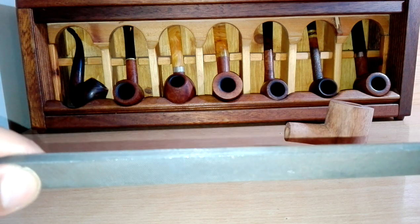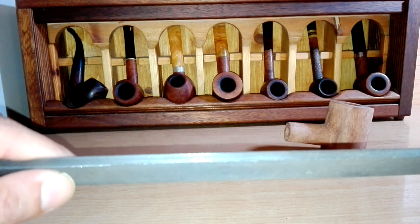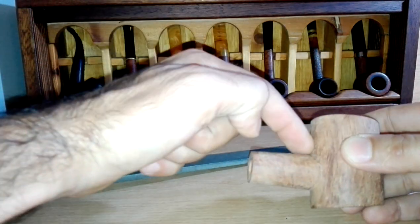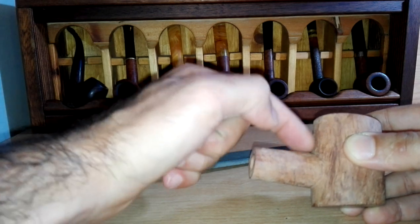This is very useful when we want to work with corners and sides such as in a block of briar. Suppose that we want to take any excess material from the shank but we do not want to affect the bowl.